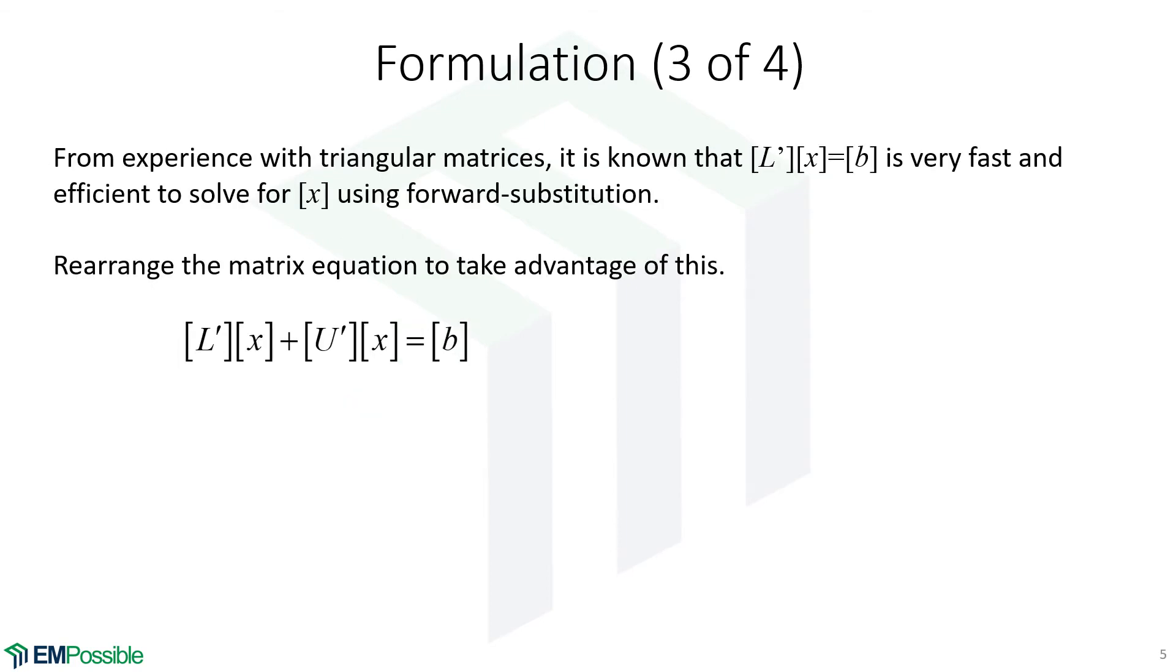Now, we know from experience with triangular matrices, they represent almost solved matrices. We know they are extremely fast to solve. If we have LX equals B, where this is a triangular matrix, we know that will be very fast to solve. Let's try to take advantage of that. Here's where we were on the previous slide. Let's move our UX over to the right. So now we have LX equals B minus UX. Then we'll put parentheses around what was on the right-hand side. We'll bring our L over to the other side, and this gives us an equation that we have to solve for X.